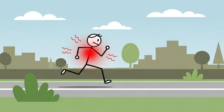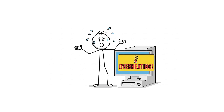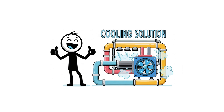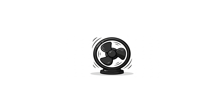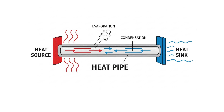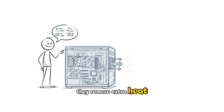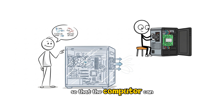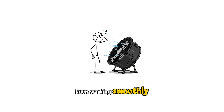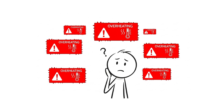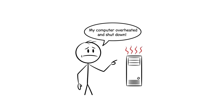When you run a marathon, your body heats up — the same thing happens to computers when they work hard. That's why we need a cooling system. Fans, heat sinks, and even liquid cooling work like the air conditioner of your PC. They remove extra heat so the computer can keep working smoothly. Without cooling, parts can overheat and stop working.